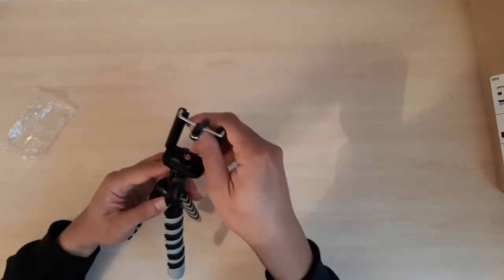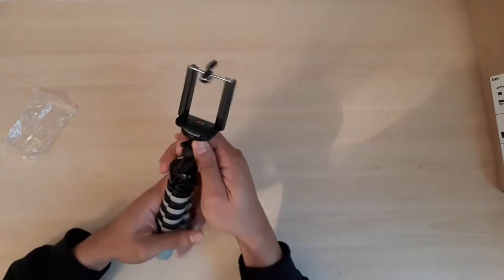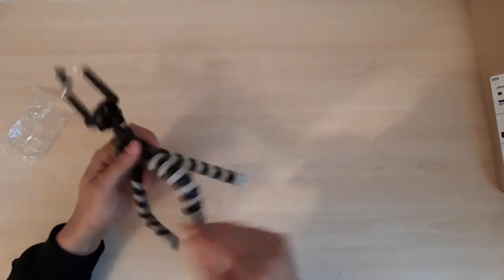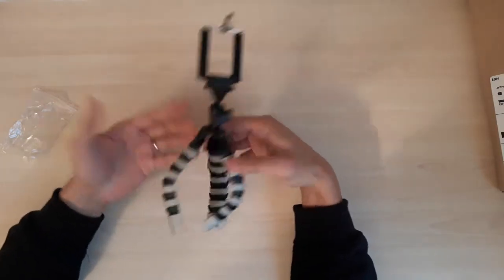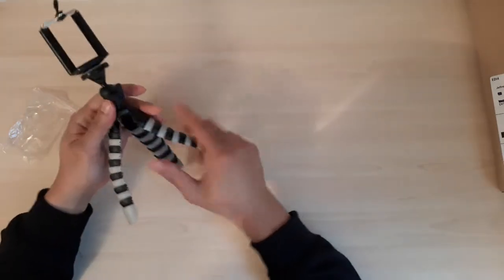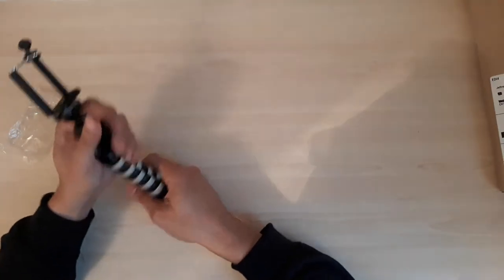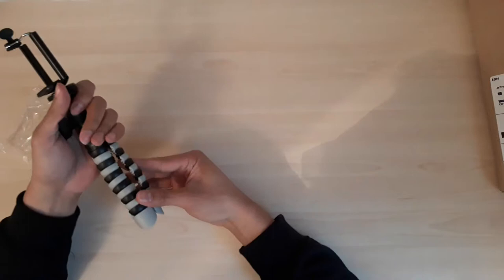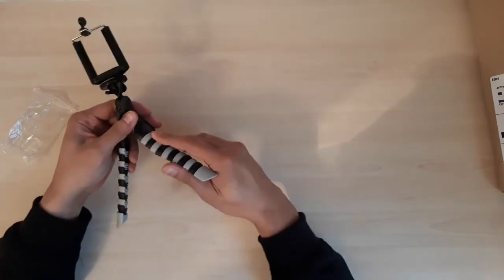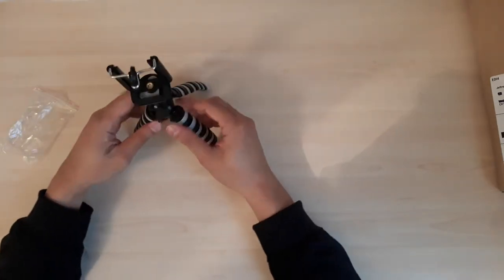Basically it's a pretty standard tripod except that it does have bendy kind of legs so you can place it in trees or poles or whatnot. The build quality I think is okay. I mean of course I have to test it out. You can use it as a tripod, you can use it as a selfie stick. This can be configured to the shape that you like. Of course it has some limitations in terms of height and grip maybe.